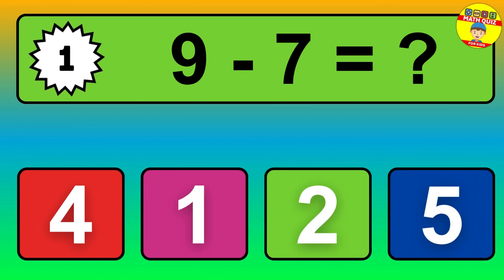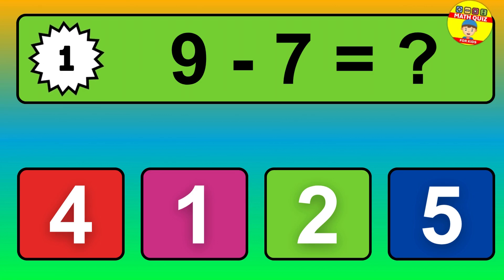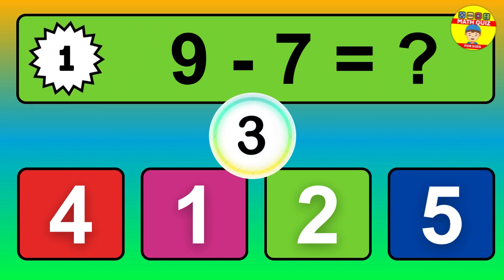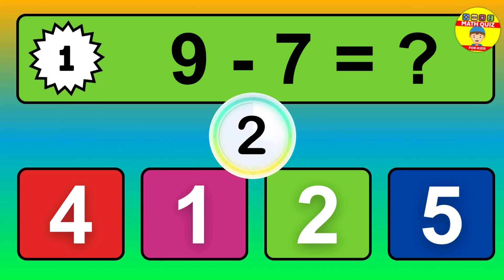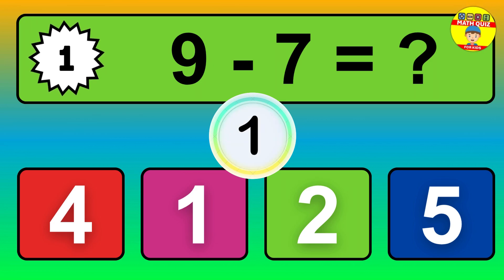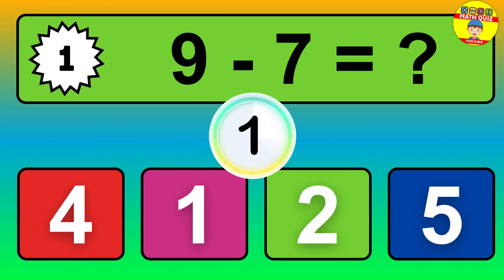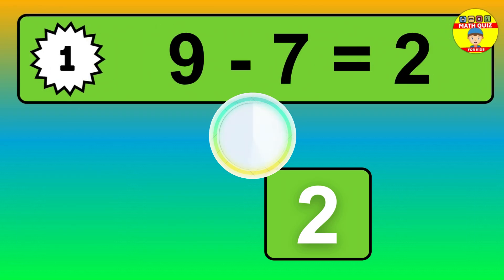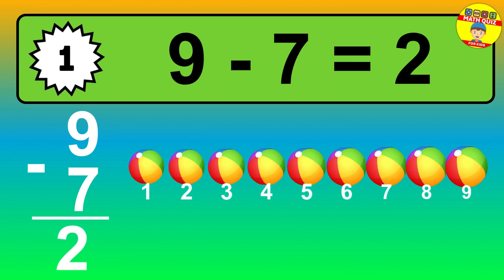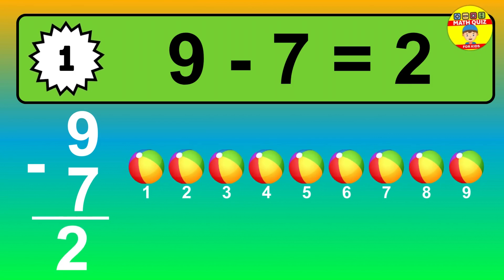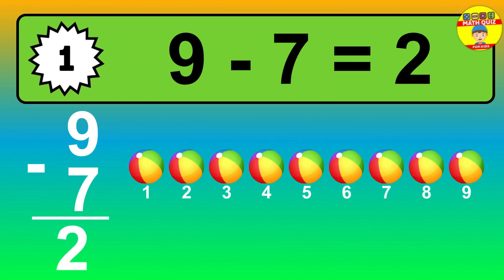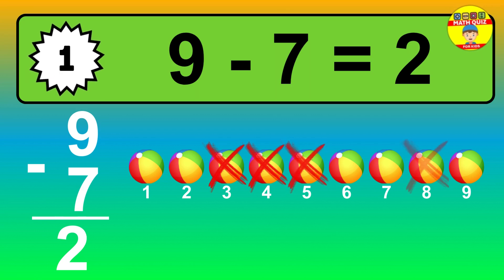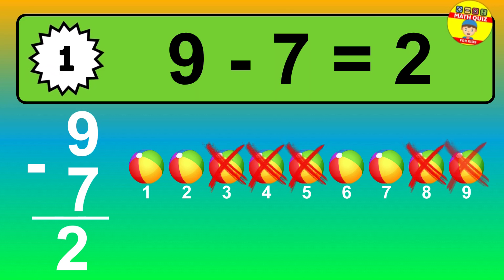Question 1. 9 minus 7 equals what? The answer is 9 minus 7 is 2. Let's count it. 1, 2.